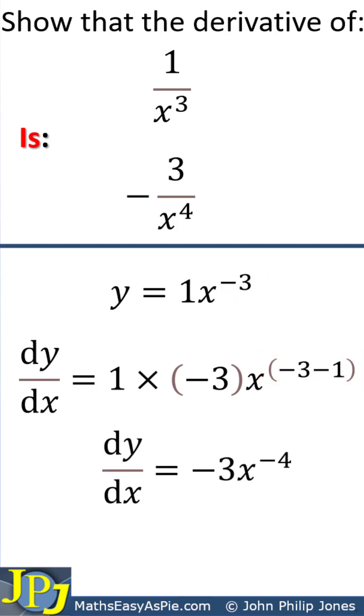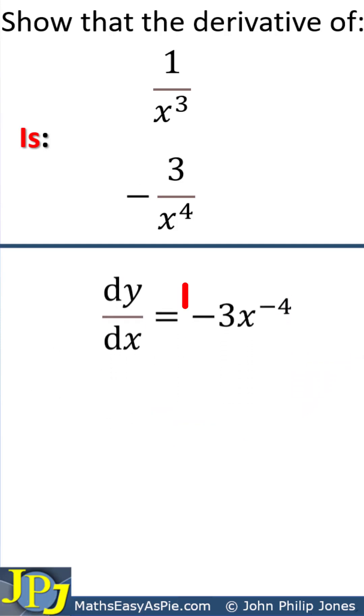Moving on to the next step, we have dy/dx equals minus 3, which is the result of this calculation. This minus 4 is the result of this calculation. If we now consider this,